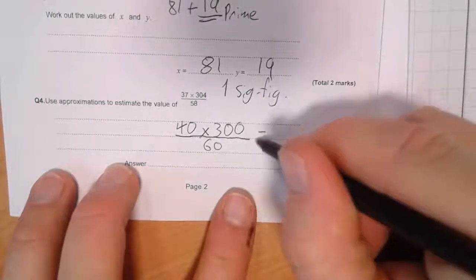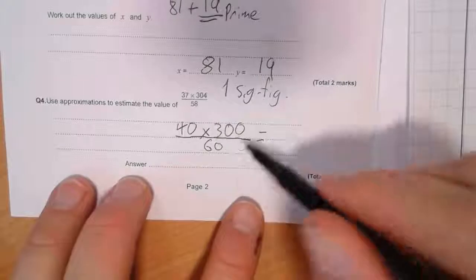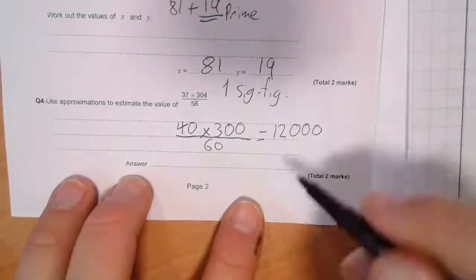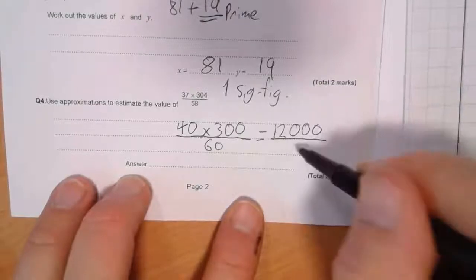So what I end up with is 4 times 3 is 12, and then I've got three zeros. 12,000 divided by 60.